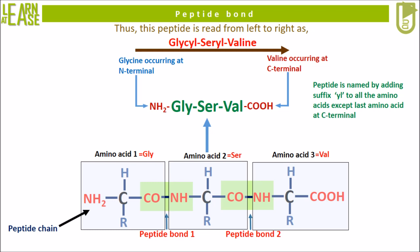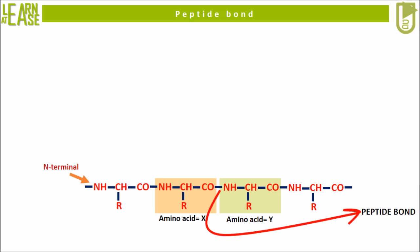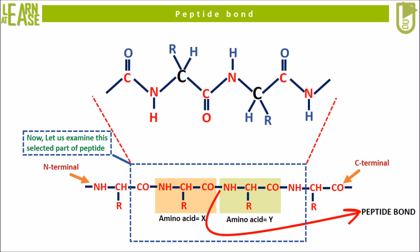Now let me represent a short peptide where two integral amino acids are represented as amino acid X and amino acid Y. This peptide possesses a few peptide bonds, with the N-terminal on the left and C-terminal on the right. Let us examine the structure of a selected region of this peptide to understand the orientation of functional groups and peptide bonds. In this selected portion, amino acid X and amino acid Y are represented using light orange and light green highlighted boxes.